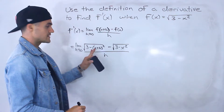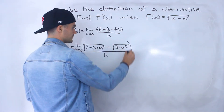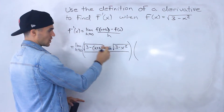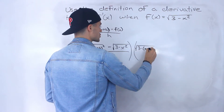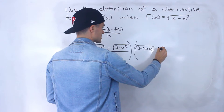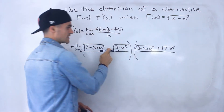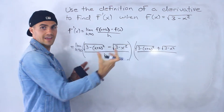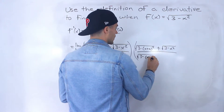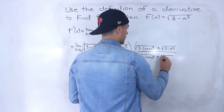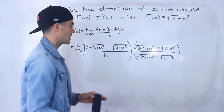Now notice that the numerator we're going to have to rationalize, so what we're going to have to do is multiply that numerator by its conjugate, which would be the square root of 3 minus (x plus h) squared plus the square root of 3 minus x squared. We just change that sign in the middle, and we've got to multiply the bottom by that as well.